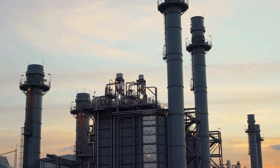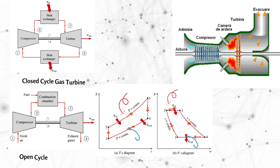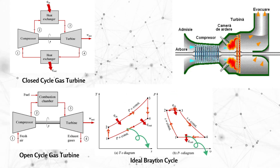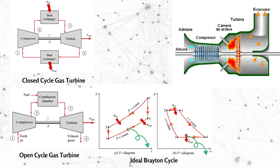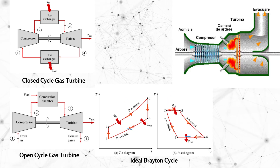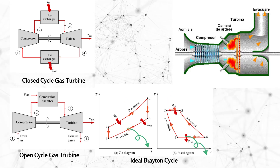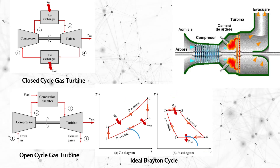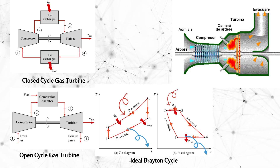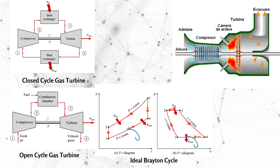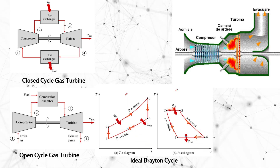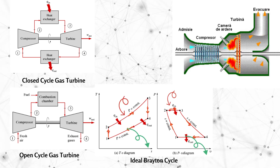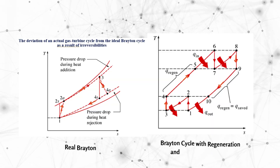A gas turbine integrates the compressor, combustor and turbine, operating based on the Brayton cycle. The ideal Brayton cycle involves isentropic compression, constant pressure heat addition and isentropic expansion. In practice, the real Brayton cycle deviates due to inefficiencies such as friction, heat losses and non-ideal component behaviour.